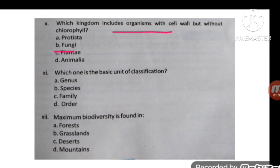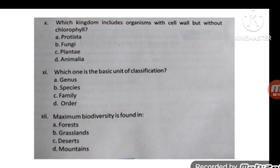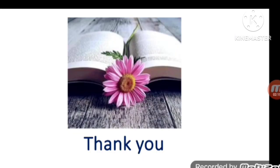The next MCQ is: which one of the following is the basic unit of classification? Species is the basic unit of classification. The last MCQ is: maximum biodiversity is found in forests.